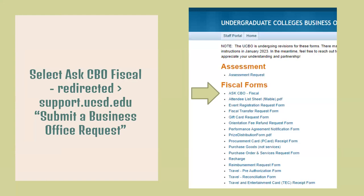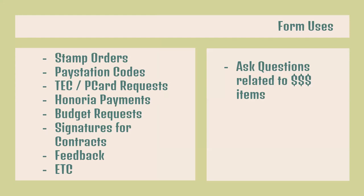After you successfully log in, you'll see this screen. The second section, Fiscal Forms, is going to be everything related to the fiscal team. The particular form we're going over today is the first one, the Ask CBO Fiscal Form. With the new system enhancement, when you click on that, it's going to pop you out to a ticket in Services and Support. Before we go over what that screenshot looks like, I just want to go over the most common uses for this Ask CBO Fiscal Form.